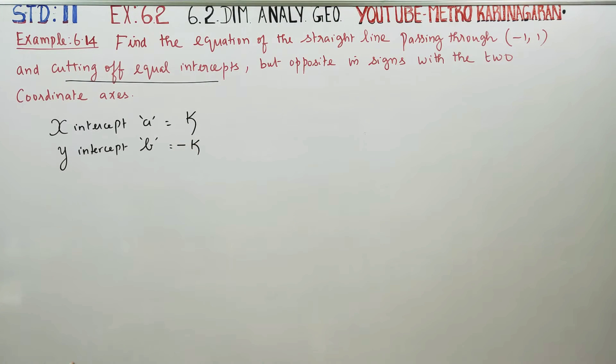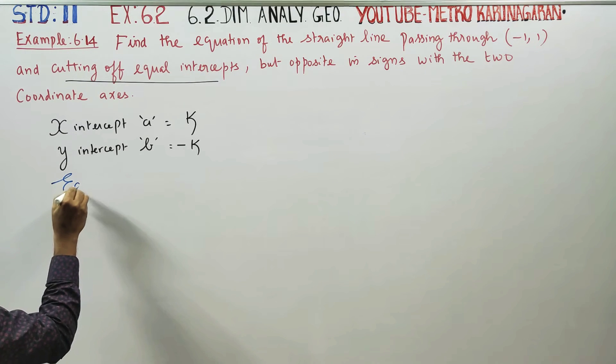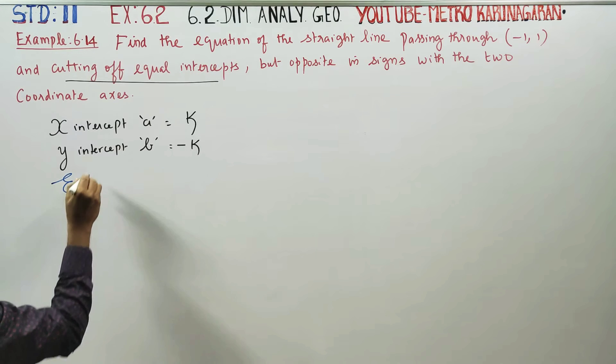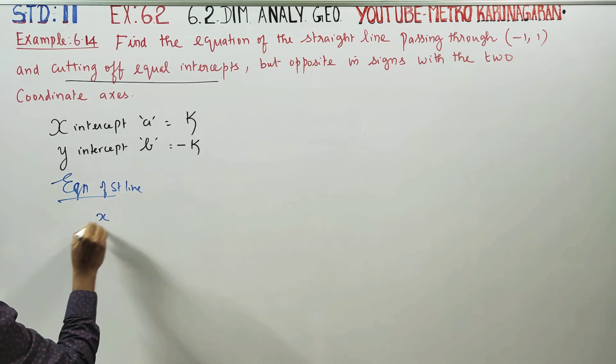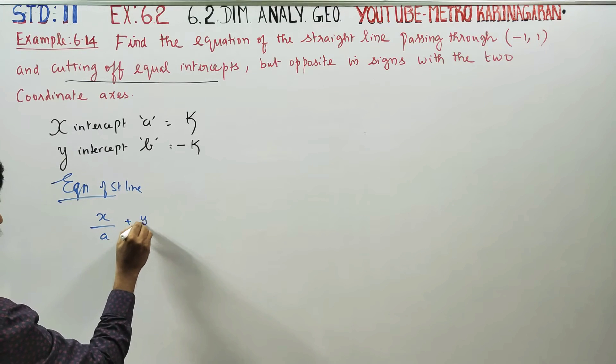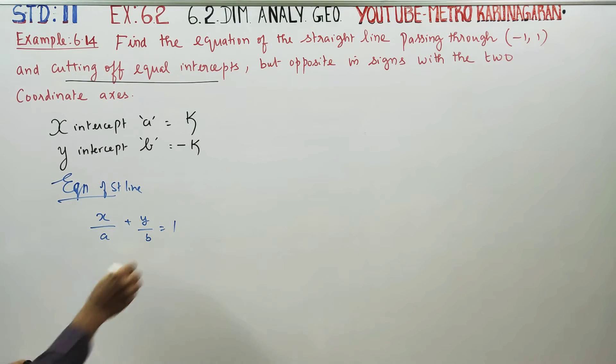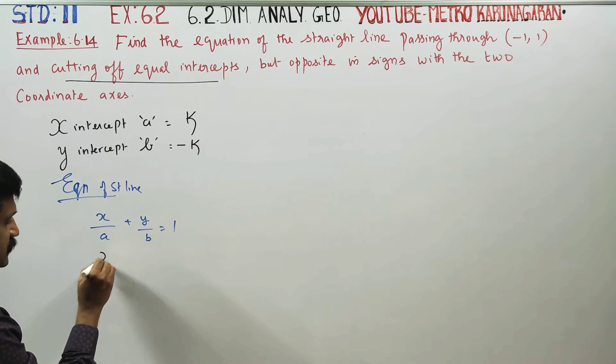If x-intercept is k, y-intercept is minus k. The equation of straight line formula is x by a plus y by b is equal to 1. This is intercept form. Use intercept formula equation of straight line x by a, y by b.